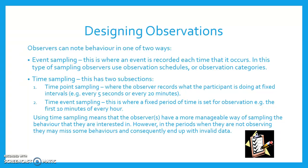Time sampling has two subsections. The first is time point sampling, where the observer records what the participant is doing at fixed intervals, for example every five seconds or every 20 minutes.